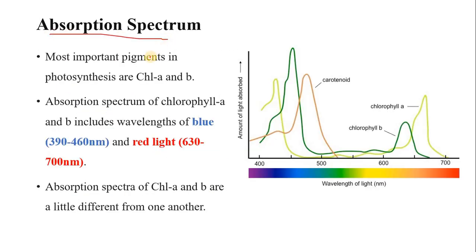First we will talk about absorption spectrum. The most important pigments in photosynthesis are chlorophyll A and chlorophyll B. We will discuss the absorption spectrum of these two pigments in particular. The absorption spectrum of chlorophyll A and B includes light in blue and red wavelengths.